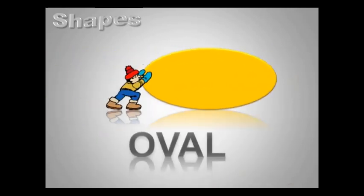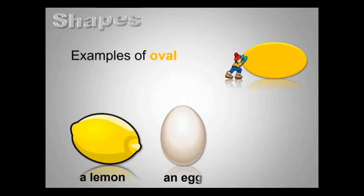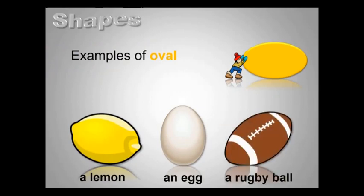This is an oval. A lemon, an egg, a rugby ball are all oval in shape.